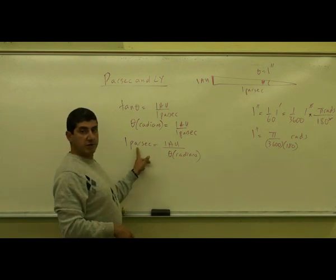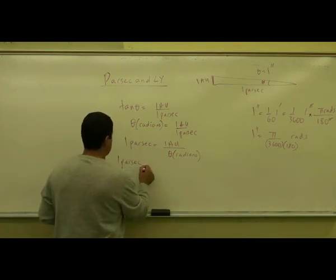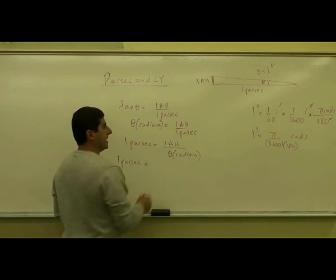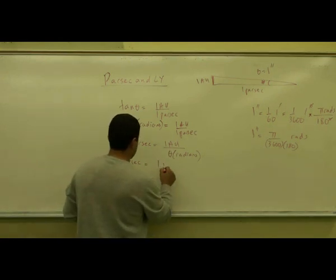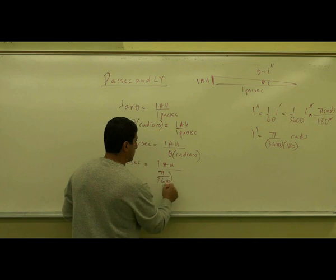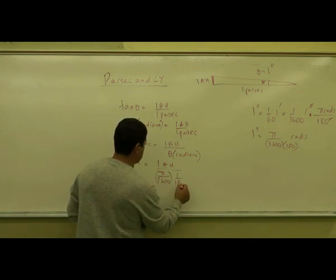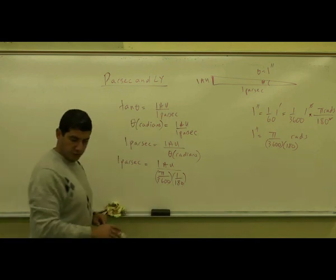So if I want to know what's one parsec, I say one parsec is equal to how many AUs. So one AU divided by pi over 3600 times 180. So what are you going to get here?